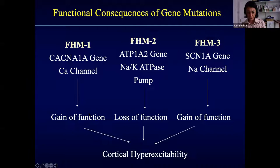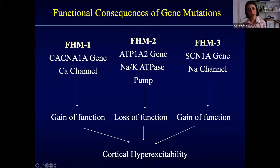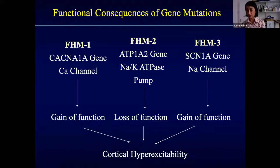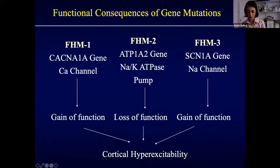Looking at the gene function: in FHM1, the gene hyperfunctions — a gain of function. In the sodium-potassium pump gene, it loses function. In the sodium pump gene, you get a gain of function. Sodium channels are interesting because they evolved in epilepsy, and we know migraine and epilepsy co-occur more than in the general population. In certain forms of FHM, a higher proportion also have seizures, producing cortical excitability.